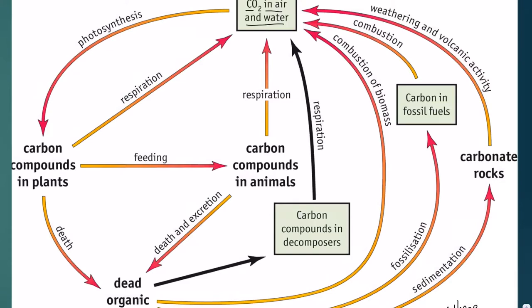Carbon dioxide is in the atmosphere or in the water, and photosynthesizing organisms — plants — will be using the CO2 in the process of photosynthesis to produce the carbon compounds that they need: we're talking about proteins, carbohydrates, lipids, and nucleic acids.